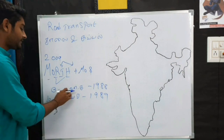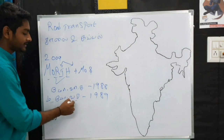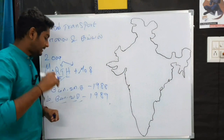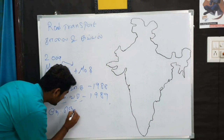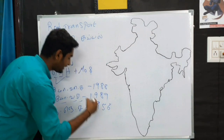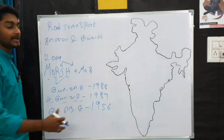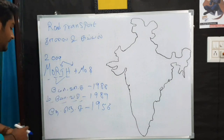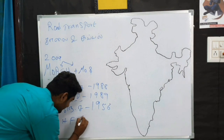The Motor Vehicle Act is from the 1980s and the Central Motor Vehicle Act is from the 1990s. The second is the National Highway Act. This is the concept of the National Highway Act.